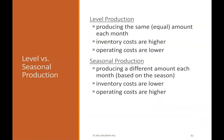Level production means producing the same equal amount each month — inventory costs are higher and operating costs are lower. Seasonal production means producing a different amount each month based on the season — inventory costs are lower and operating costs are higher.